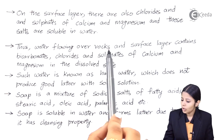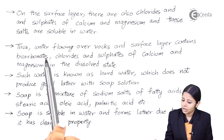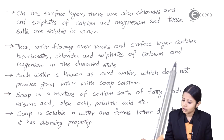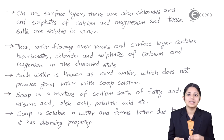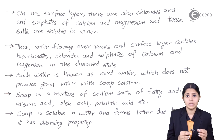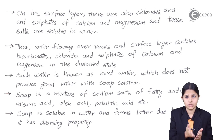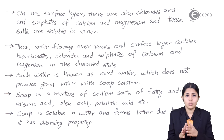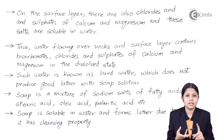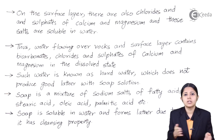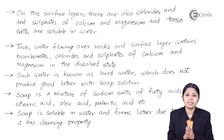Thus, water flowing over rocks and surface layers contains bicarbonates, chlorides, and sulfates of calcium and magnesium in the dissolved state. That is the reason why we cannot use water directly from springs or streams, because it comes cutting through rocks. Even in mountainous regions, water cuts through rocks, and the sulfates, chlorides, and bicarbonates present in those rocks dissolve into the water, eventually making soft water hard.